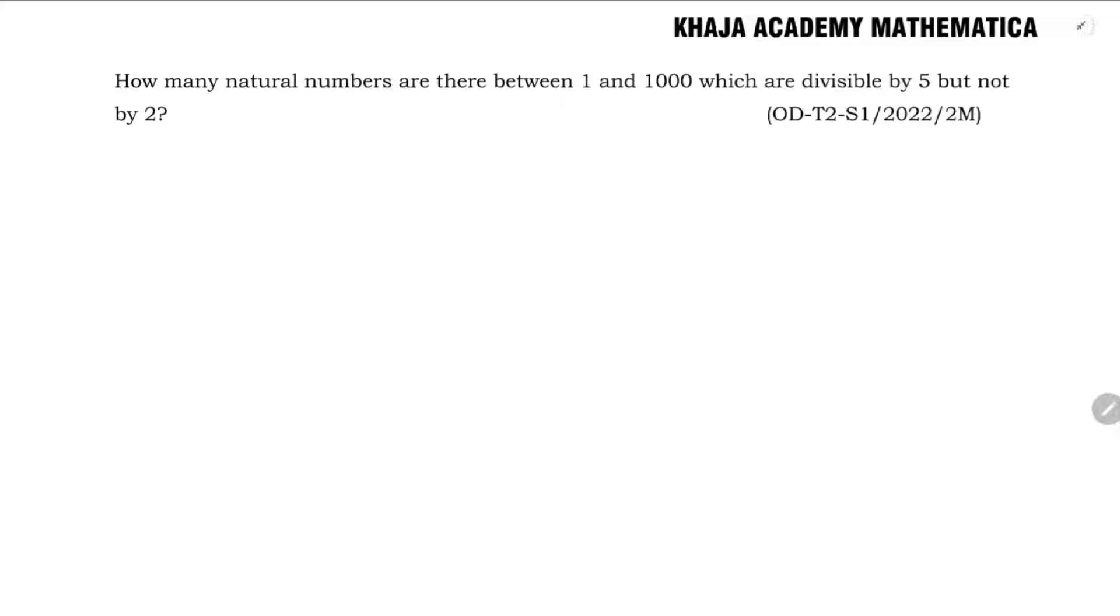The numbers which are divisible by 5, for example between 1 and 1000, first I will write like 5, 10, 15, 20, 25, 30, and so on.